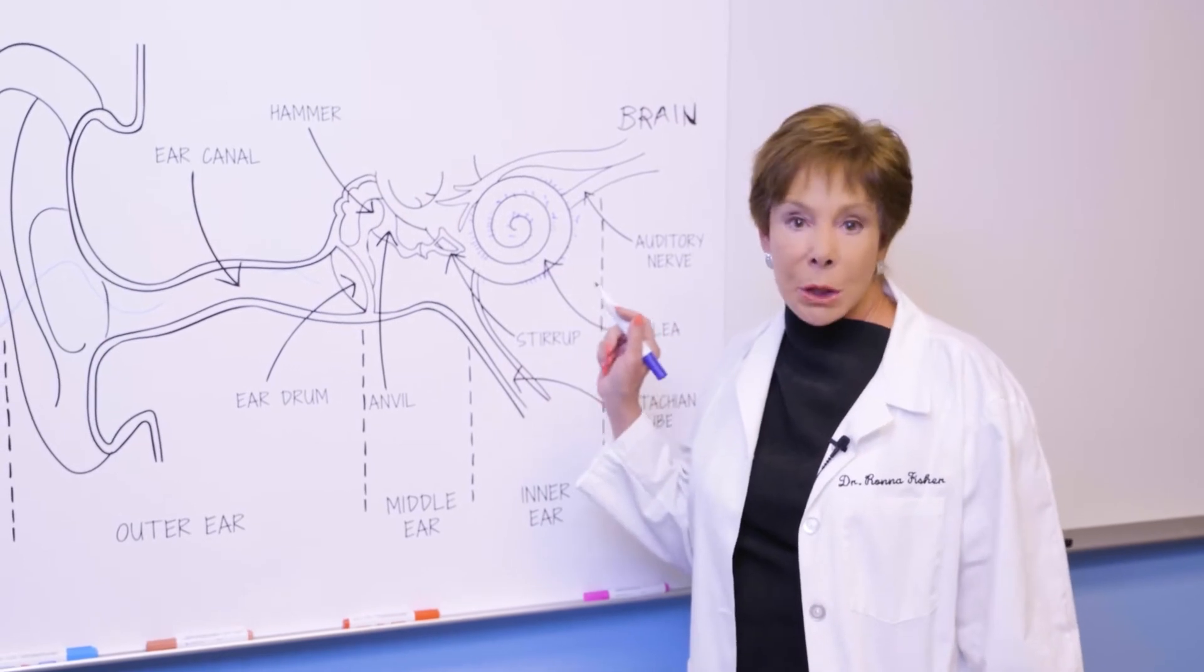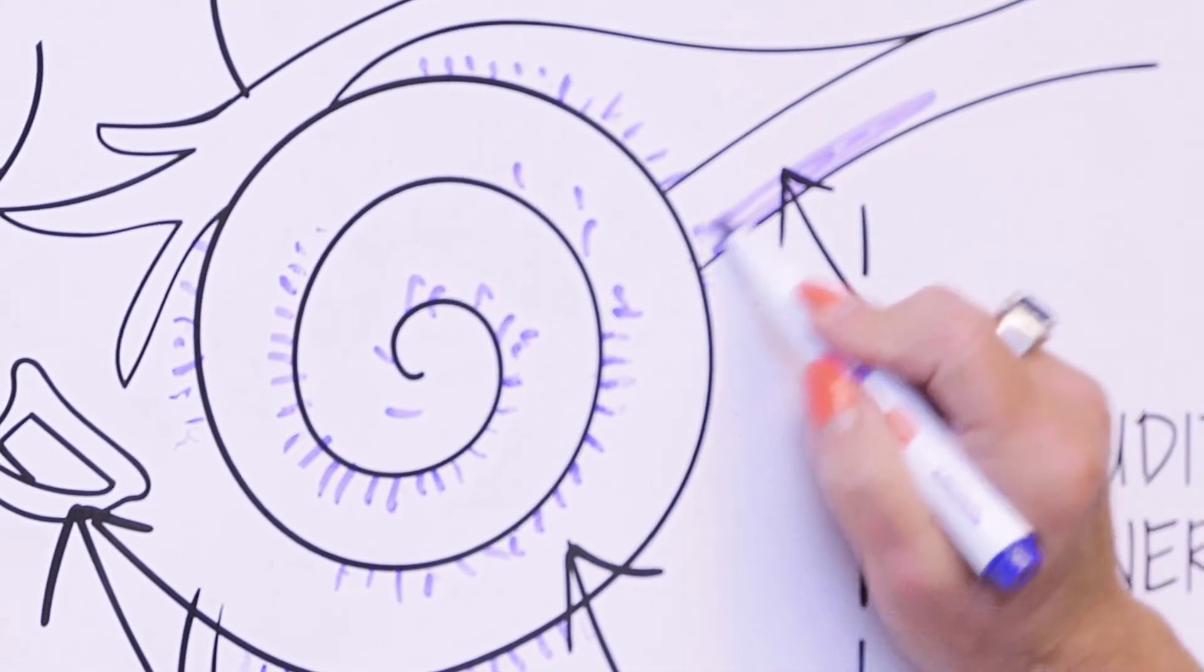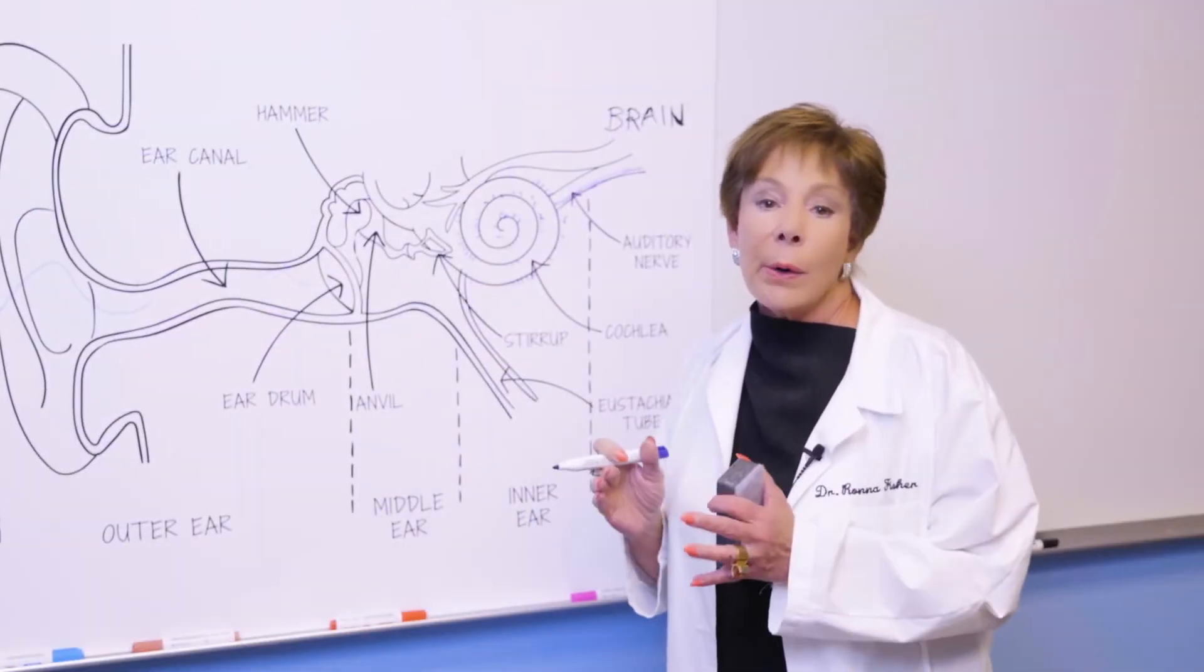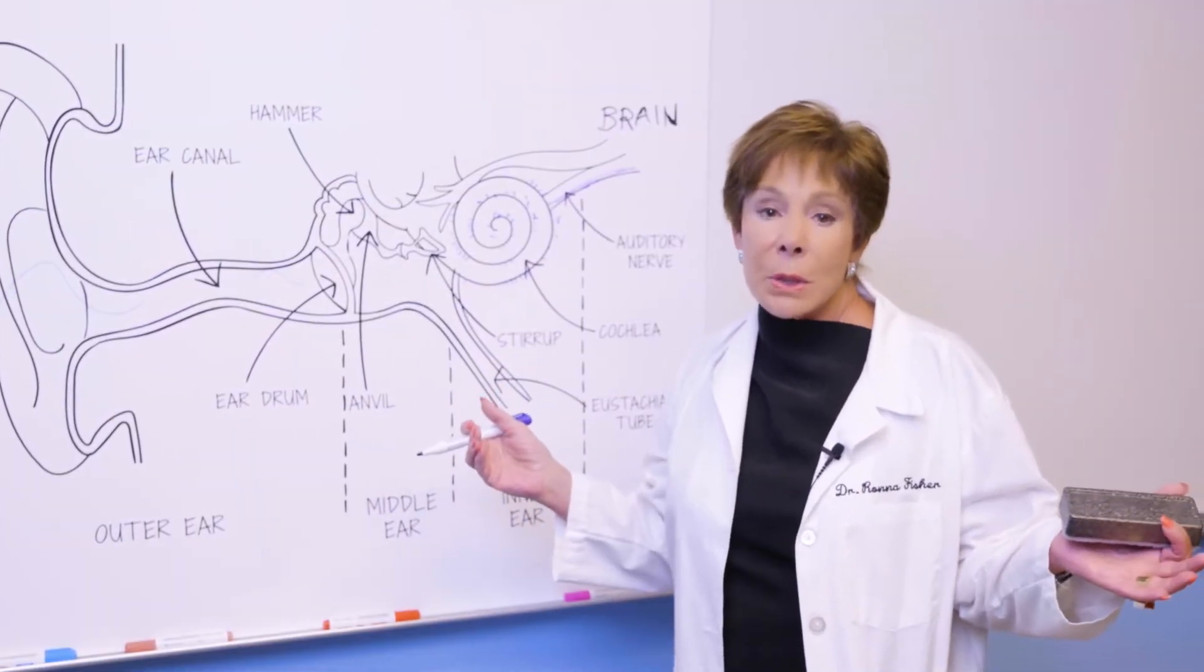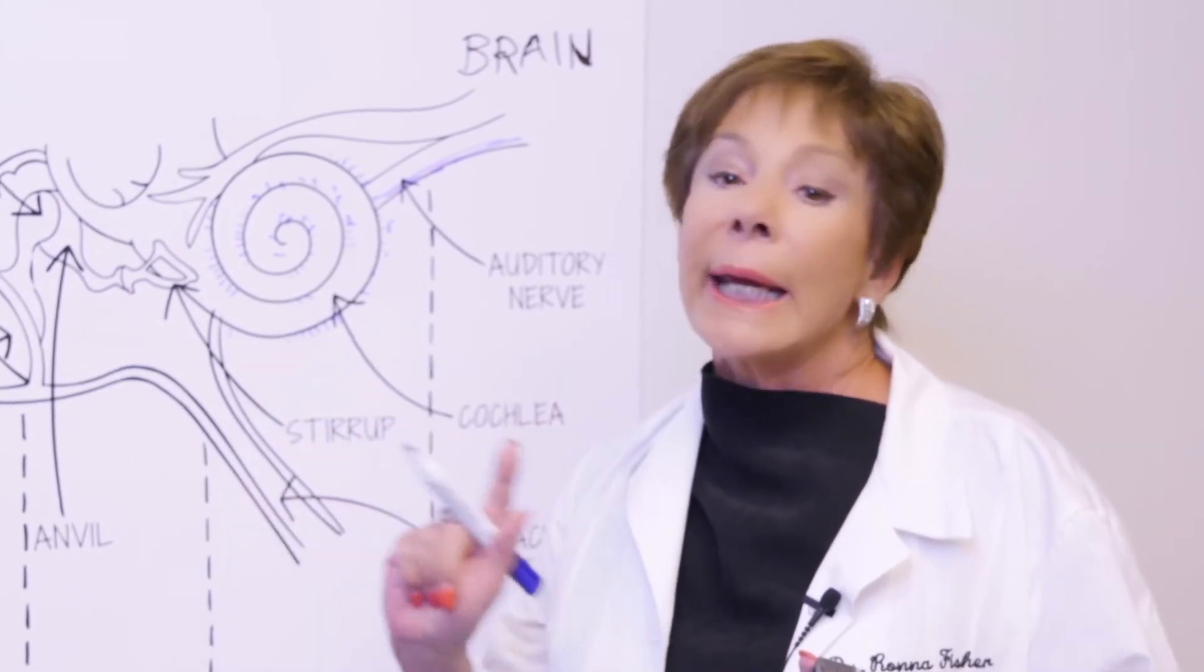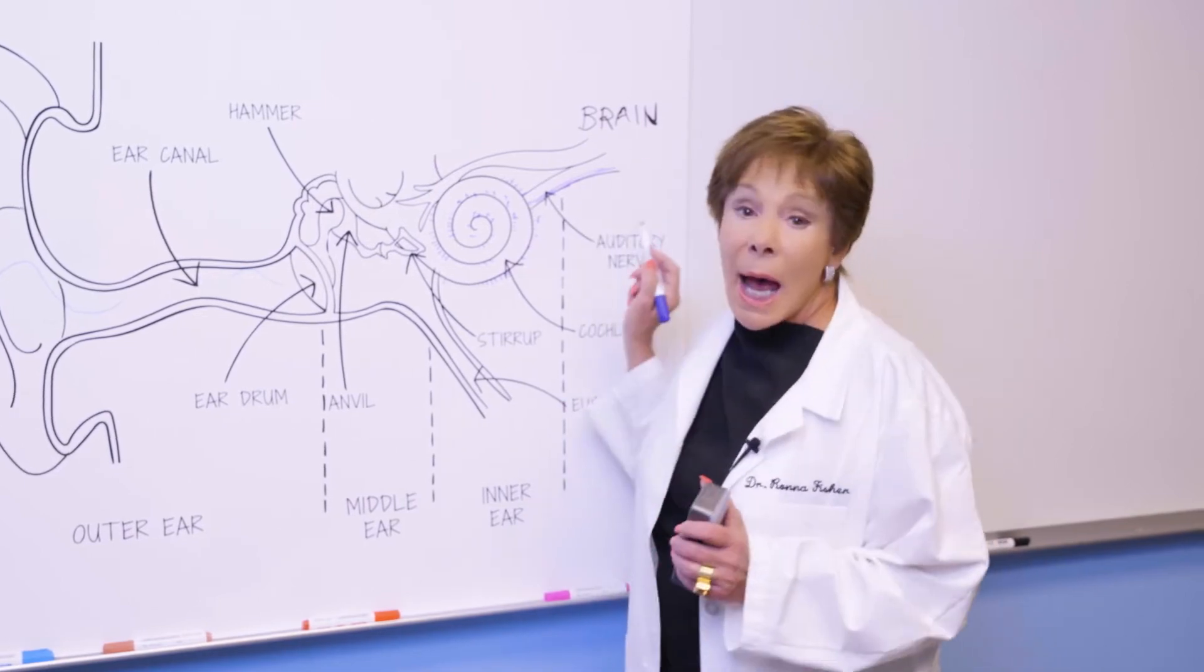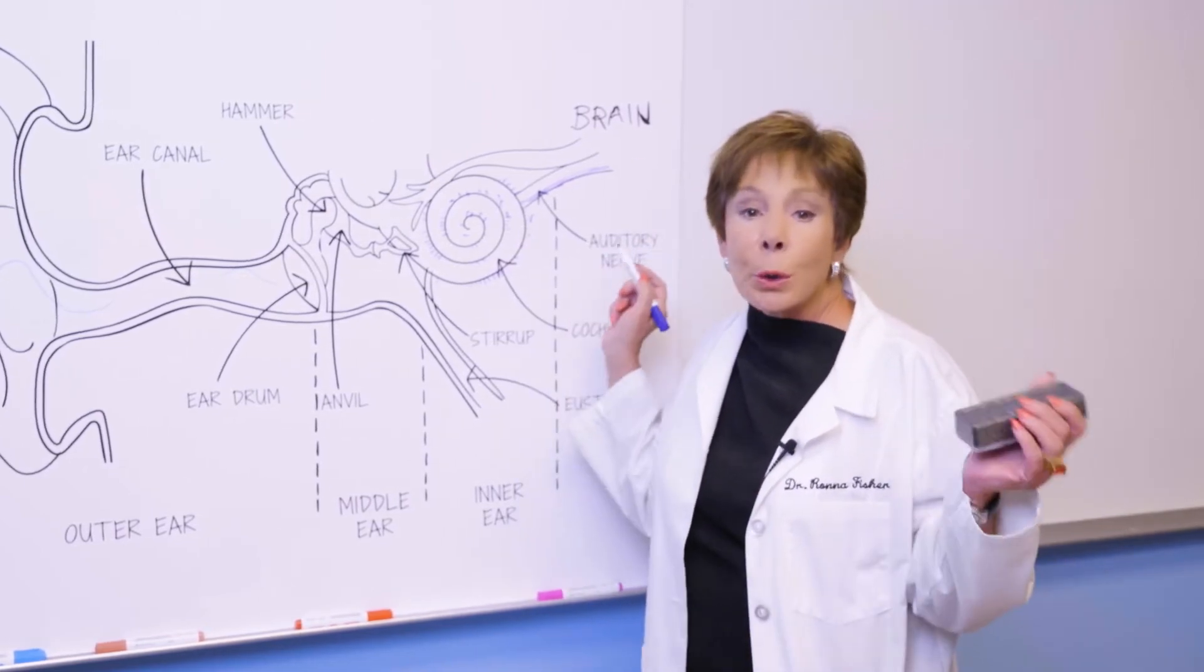Less and less information is going up the auditory nerve, and after a while, it starts to narrow. It's not being used. That's permanent damage that can't be fixed. The nerve can no longer send as much information as it used to to your brain.